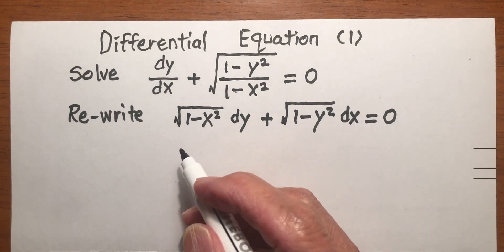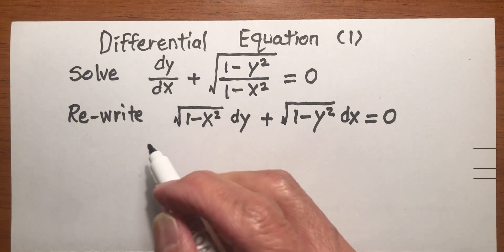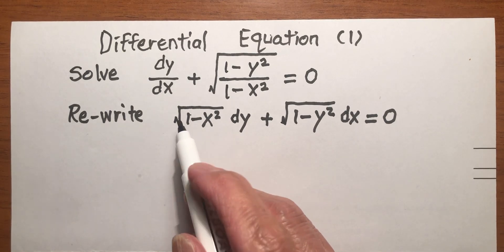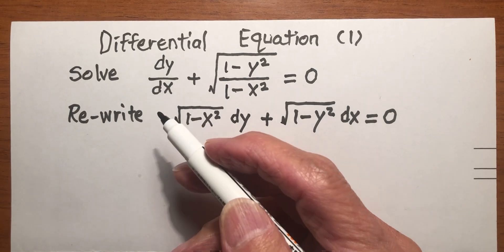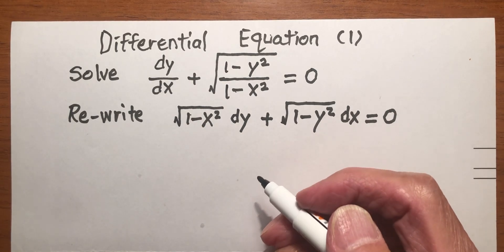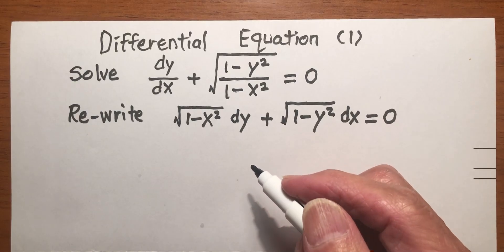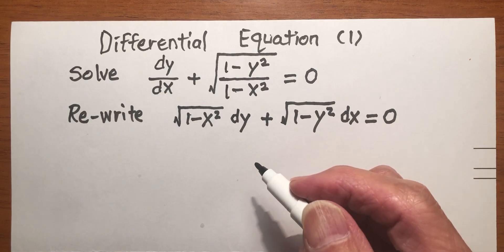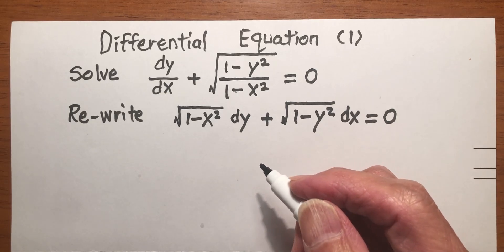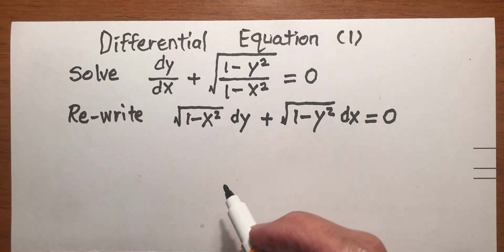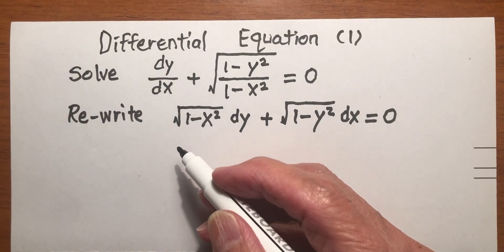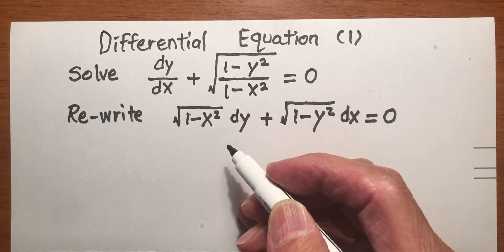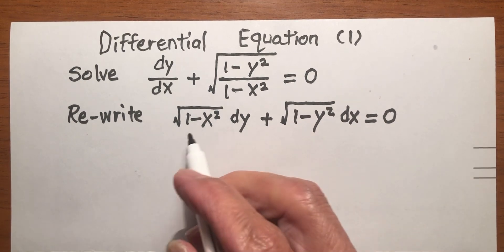Remember the product rule. The derivative of u times v is u prime v plus v prime u.